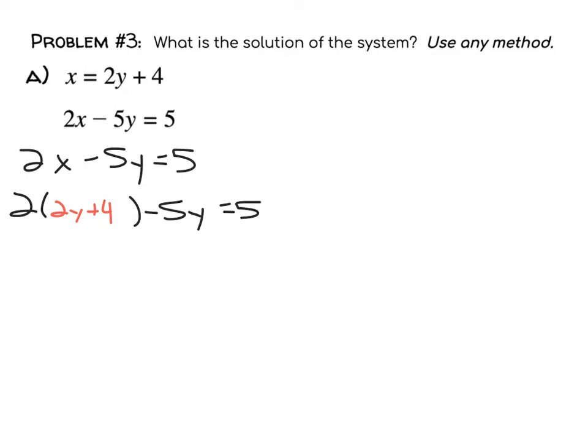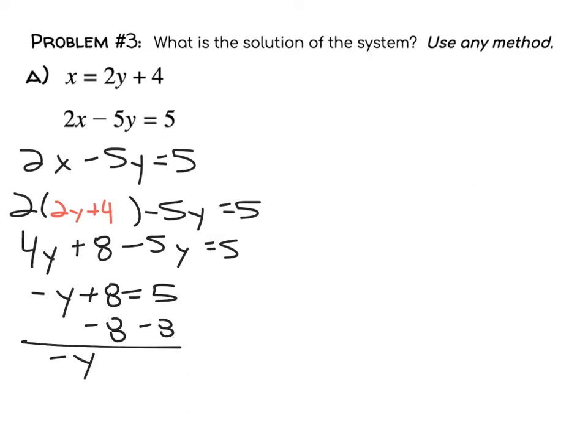Now I'm going to distribute through. 2 times 2y is 4y, 2 times 4 is 8, minus 5y equals 5. Combining like terms, the y terms: 4y and negative 5y combine to be negative y plus 8 equals 5. When I subtract 8 from both sides, you get negative y equals negative 3. And if you divide by negative 1, you get y equals 3.